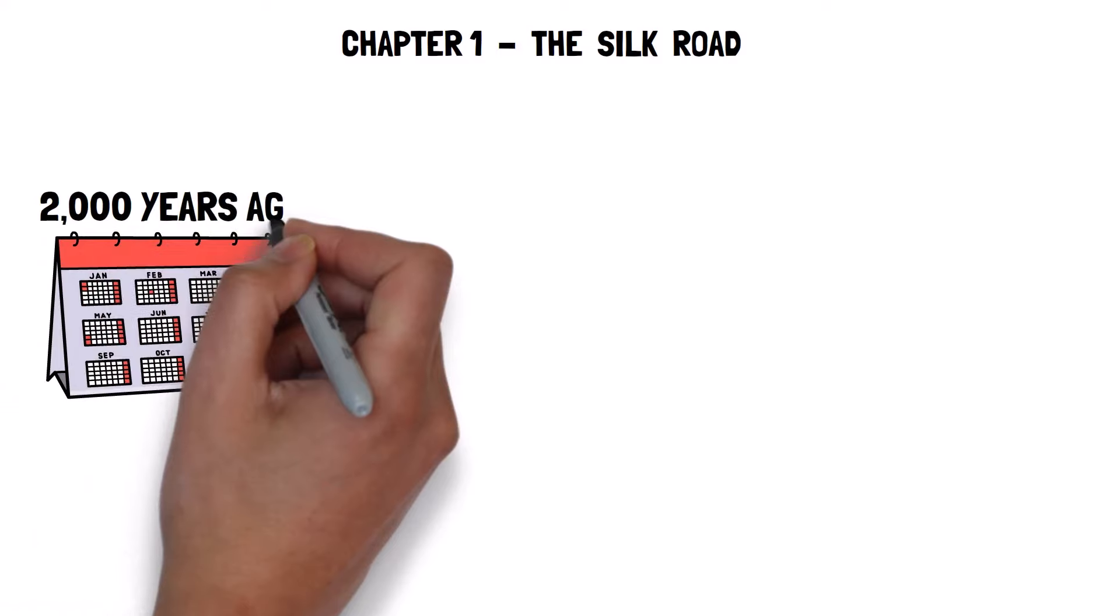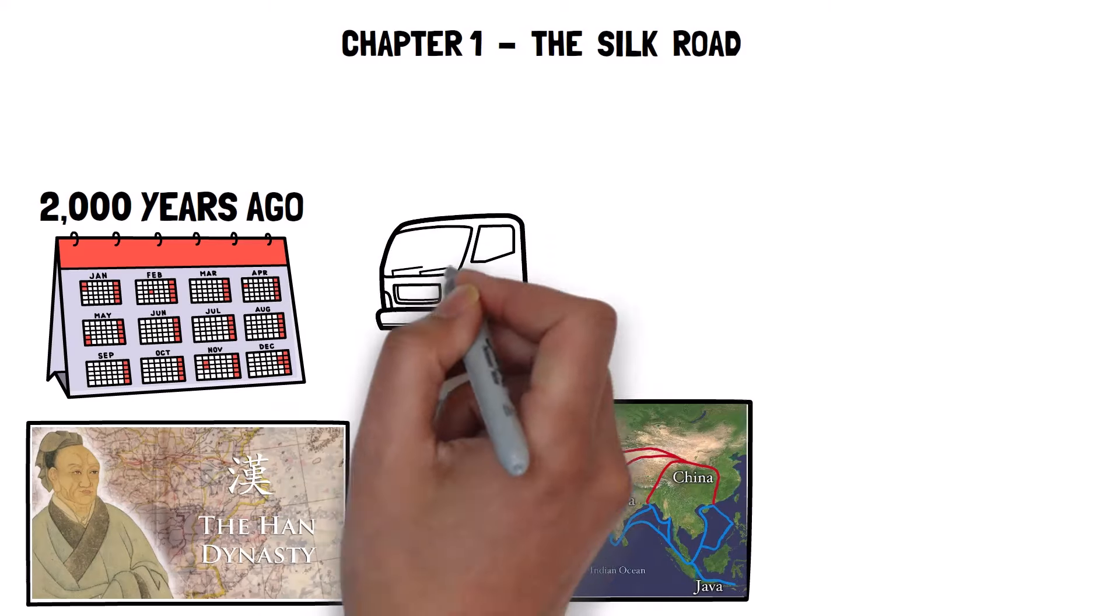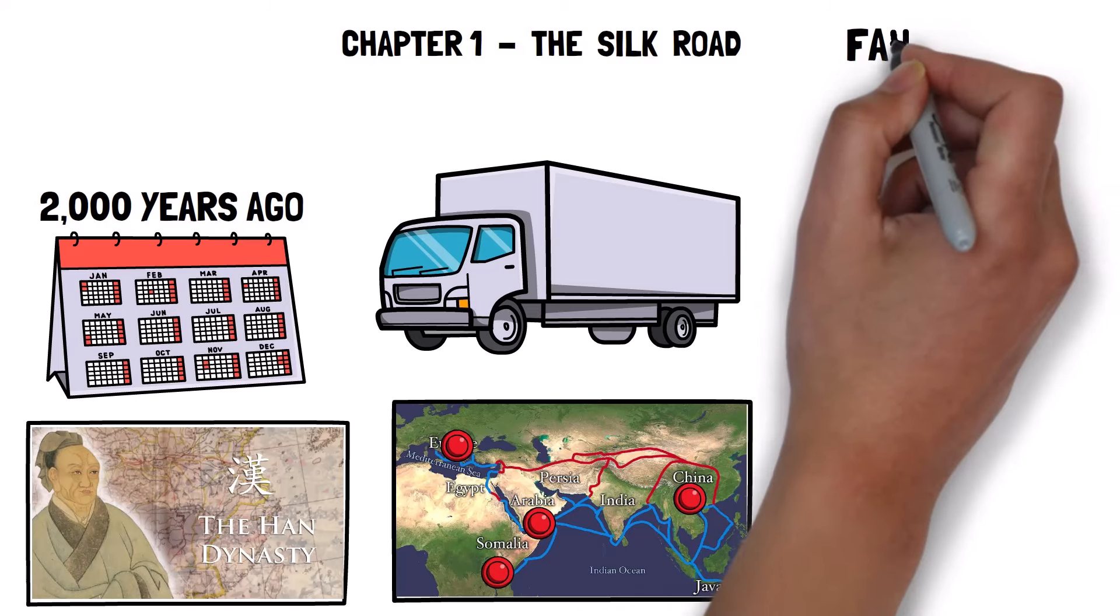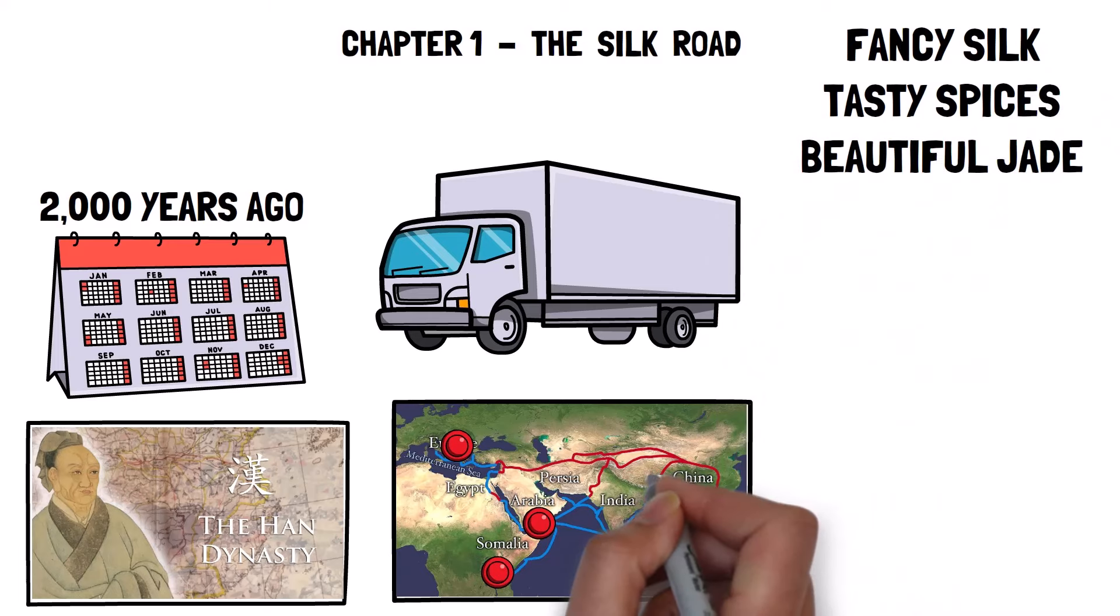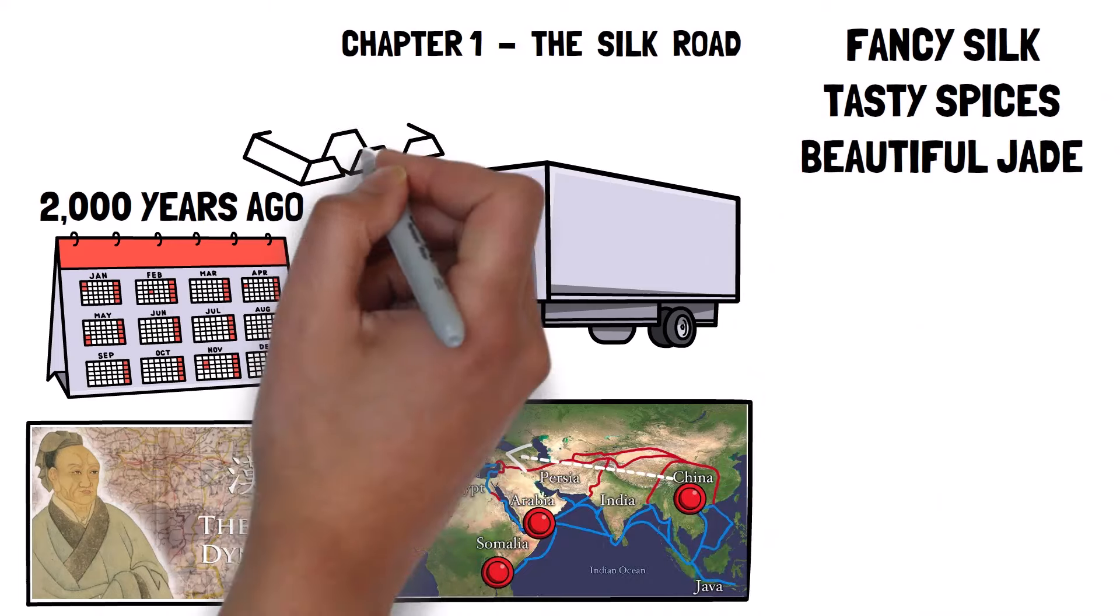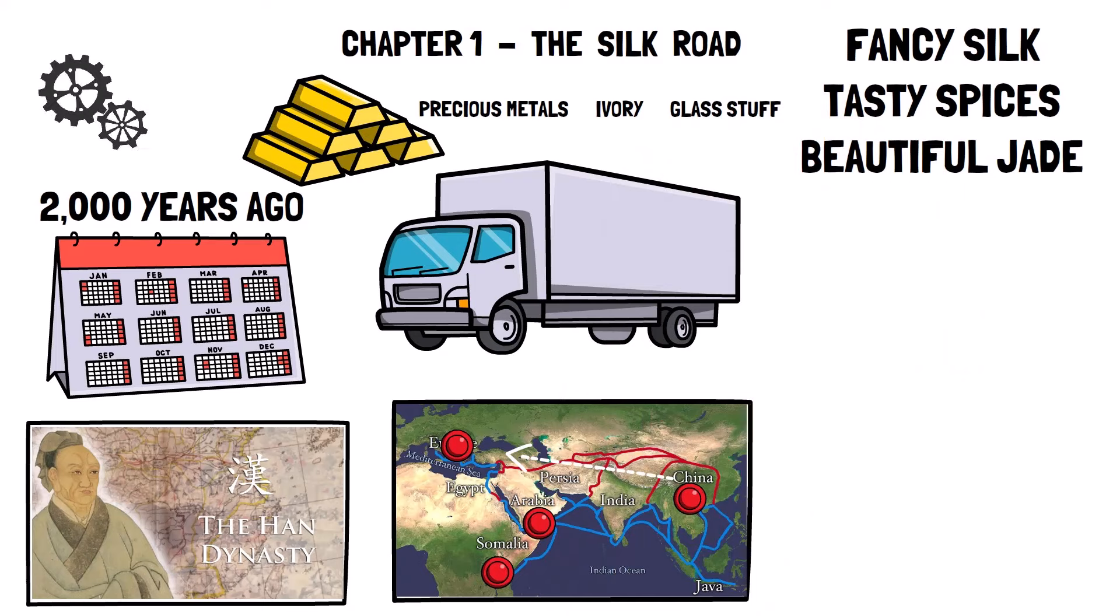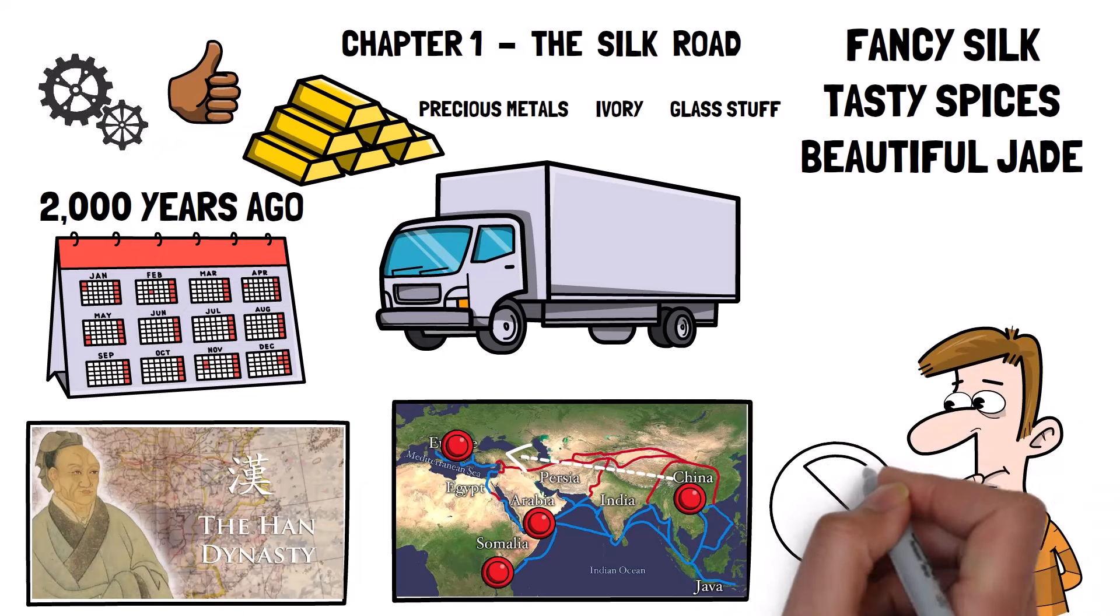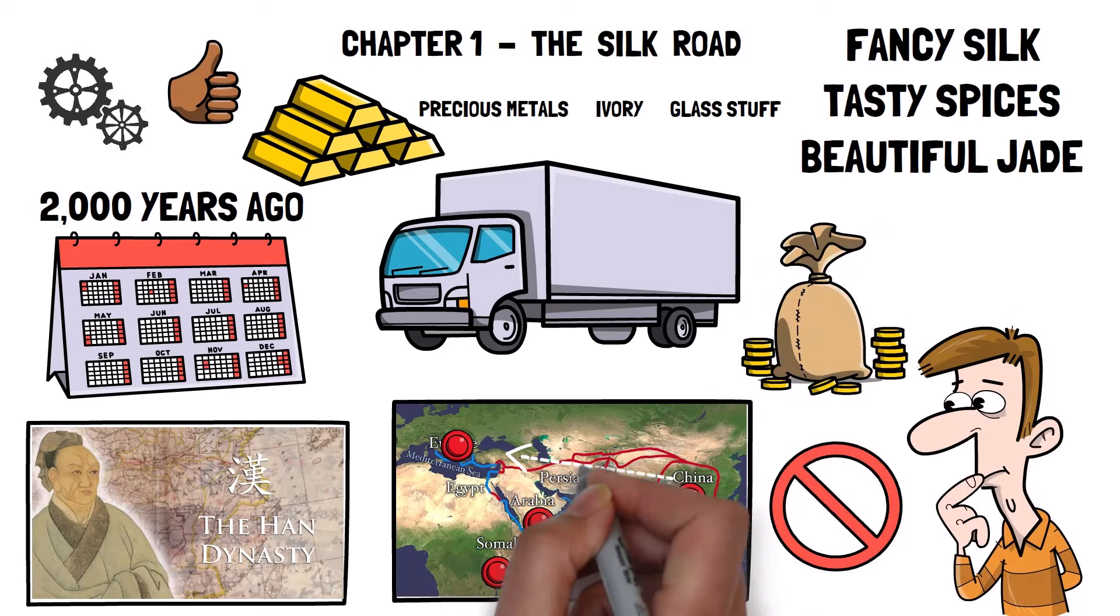Around 2,000 years ago, during China's Han Dynasty, they came up with the idea of the Silk Road. It was like an ancient highway for trading stuff, and it stretched for over 4,000 miles from China to the Mediterranean, going through Europe and Eurasia. This road made Central Asia a big deal in the world trade scene. China sent things like fancy silk, spices, jade, and other cool stuff to the West. In return, they got gold, precious metals, ivory and glass. It worked really well, like a smooth-running machine. The important thing is that it brought a lot of money and growth to Central Asia.